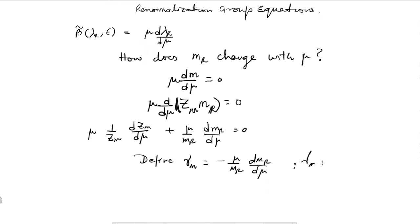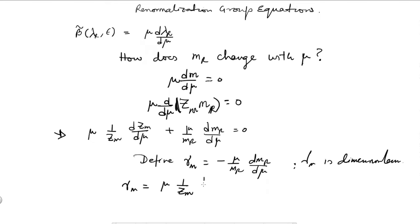gamma_m is dimensionless. Using this equation, gamma_m is equal to mu times 1 over zm times d_zm over d_mu.